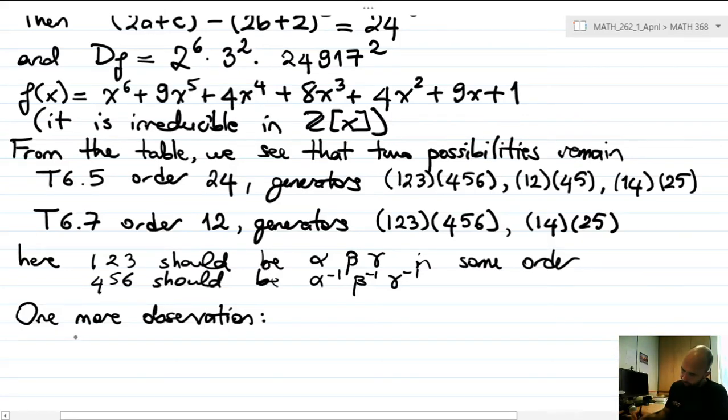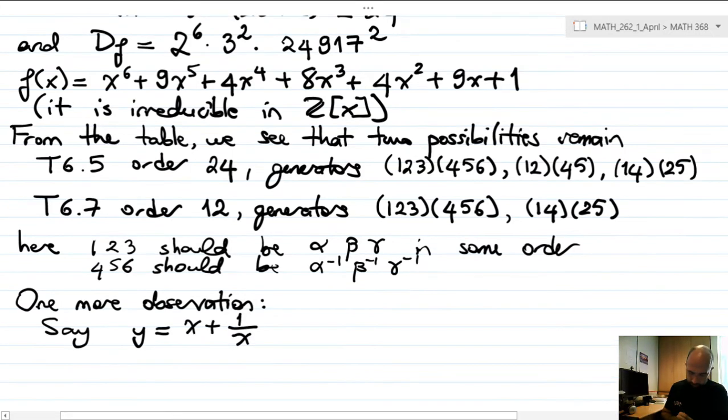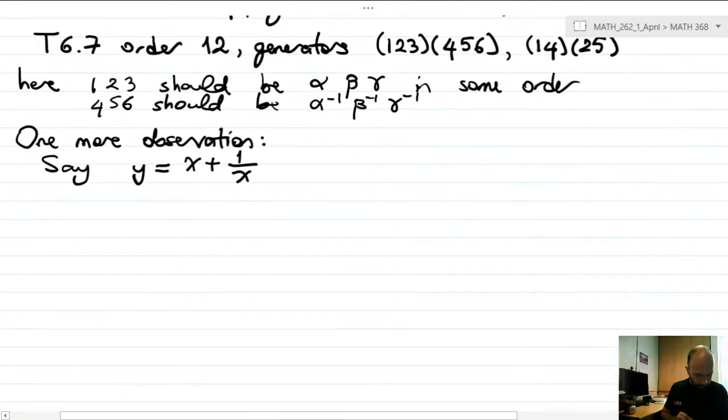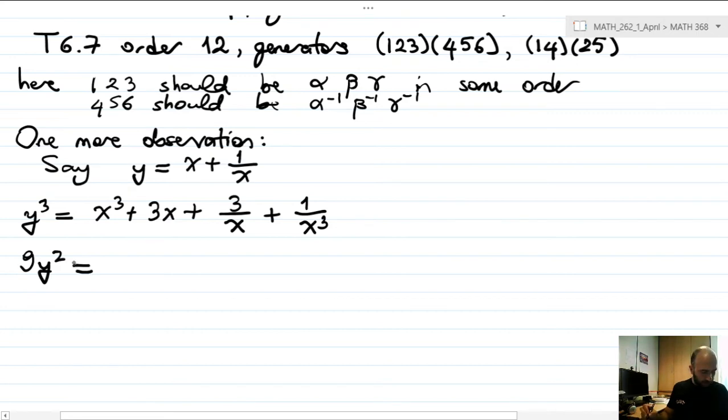Okay, let's say y is equal to x plus 1 over x. Now here's a quick observation. Look at y cubed - we can use binomial expansion to write this as x cubed plus 3x plus 3 over x plus 1 over x cubed. Now let's also look at 9y squared.